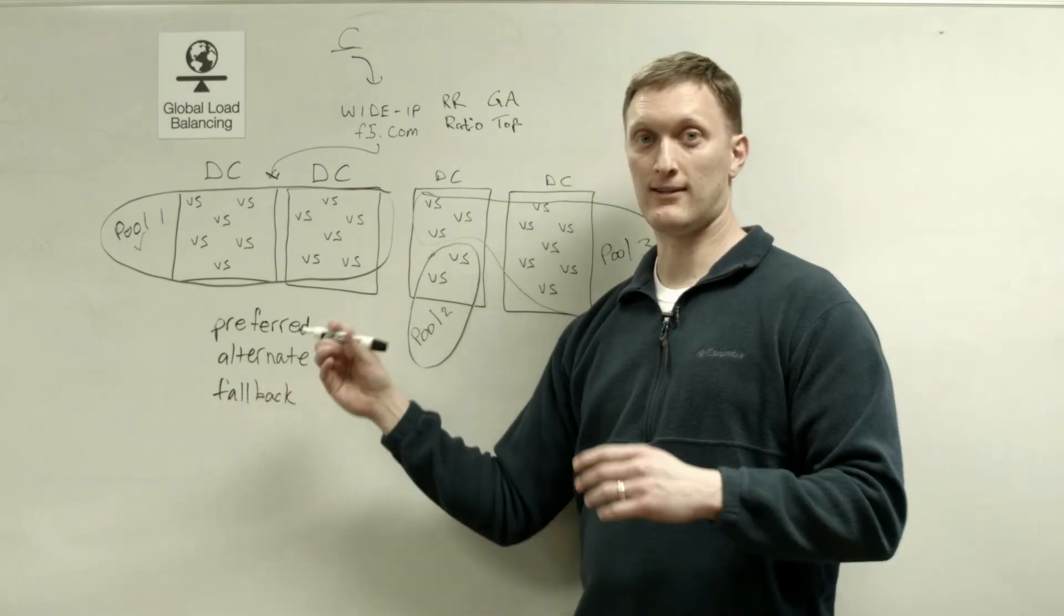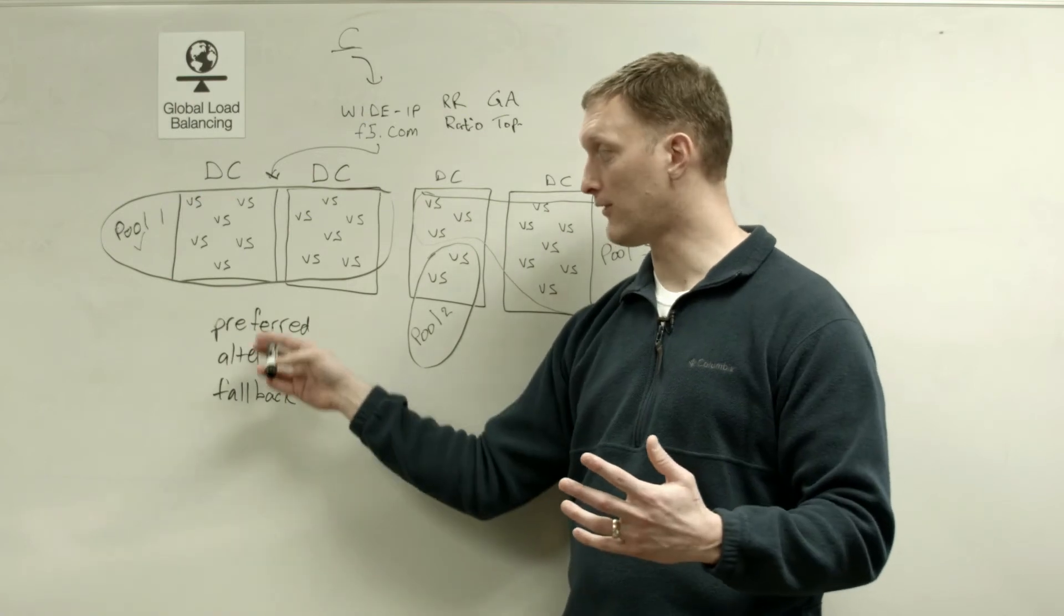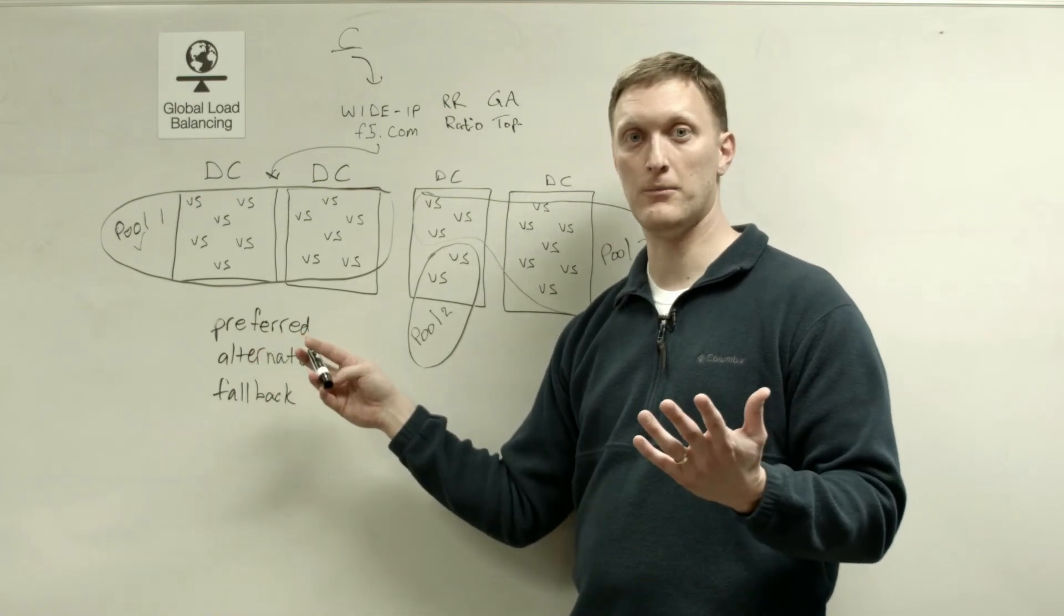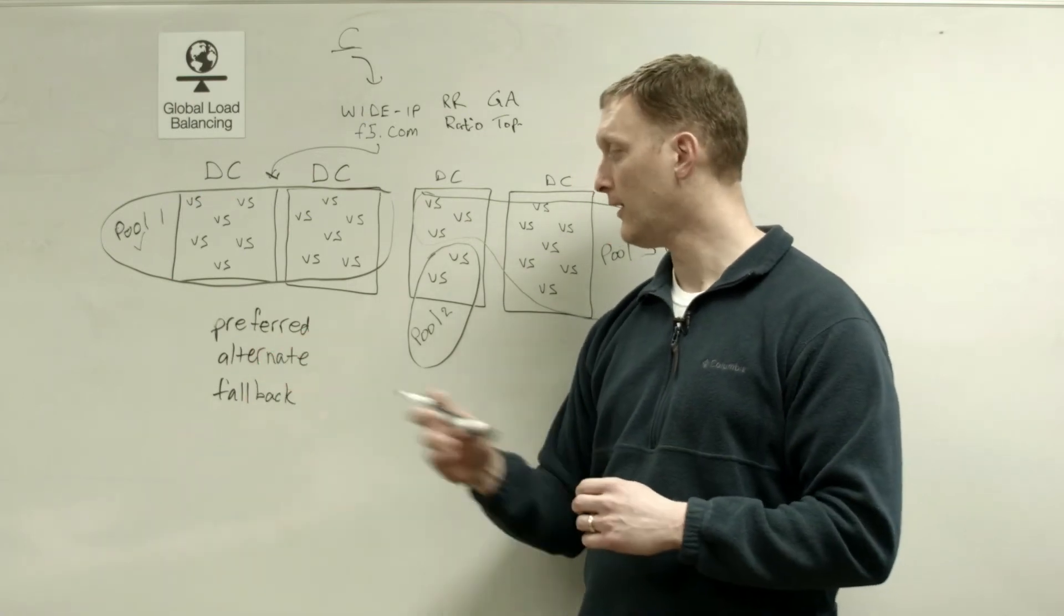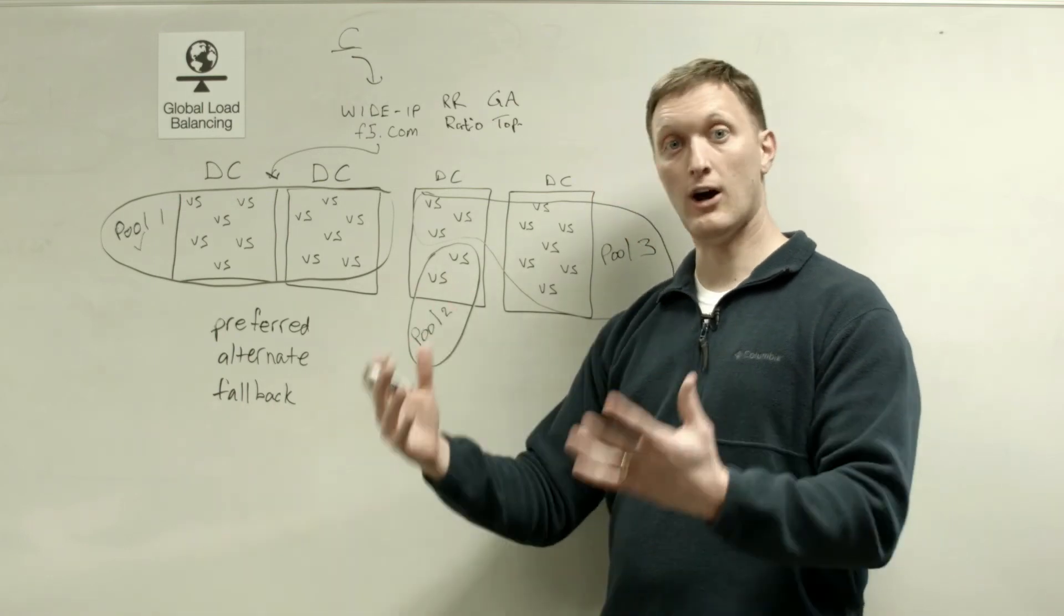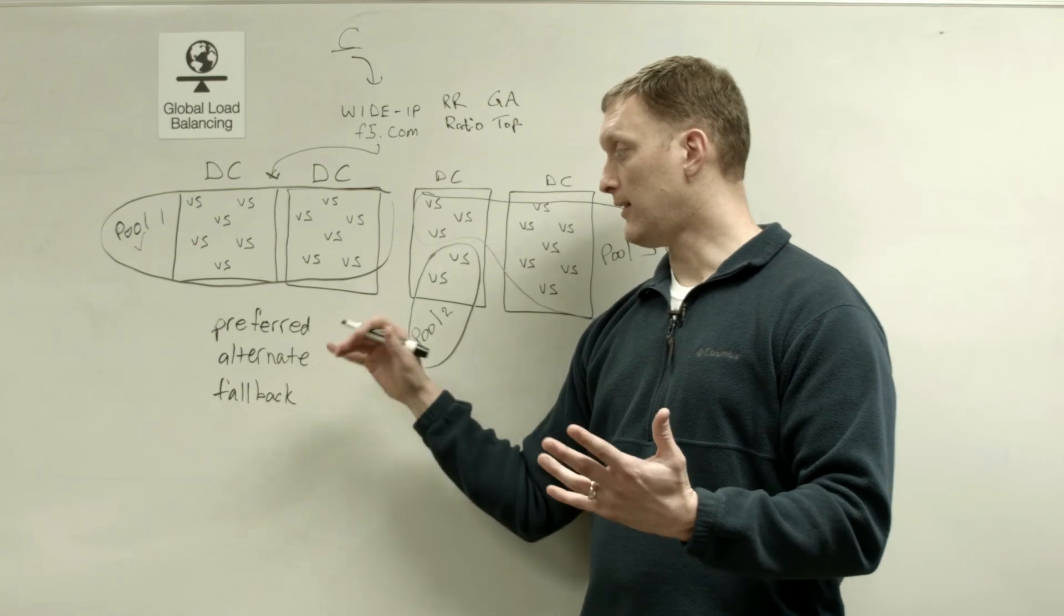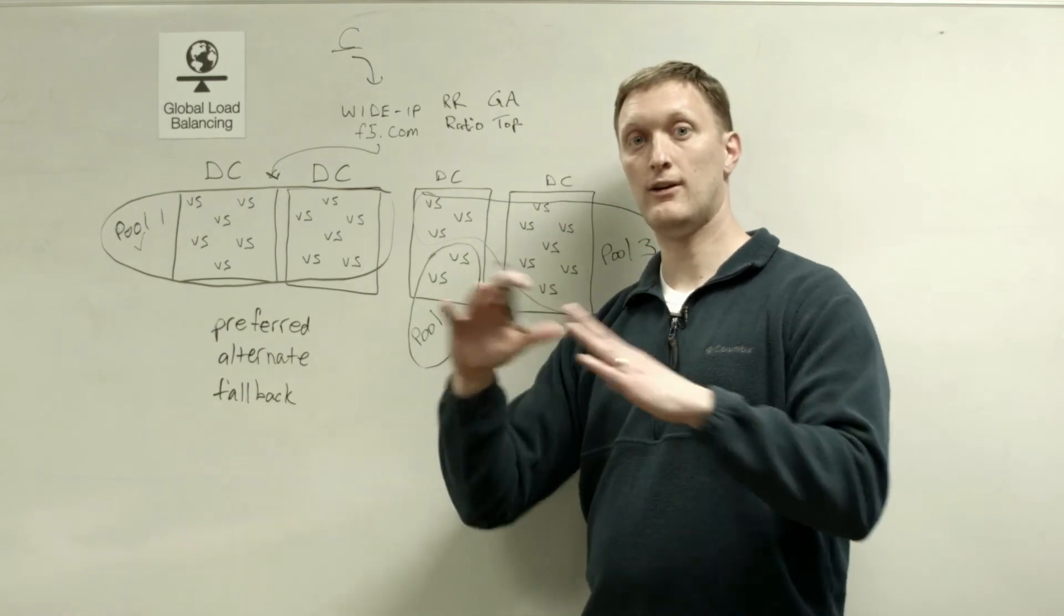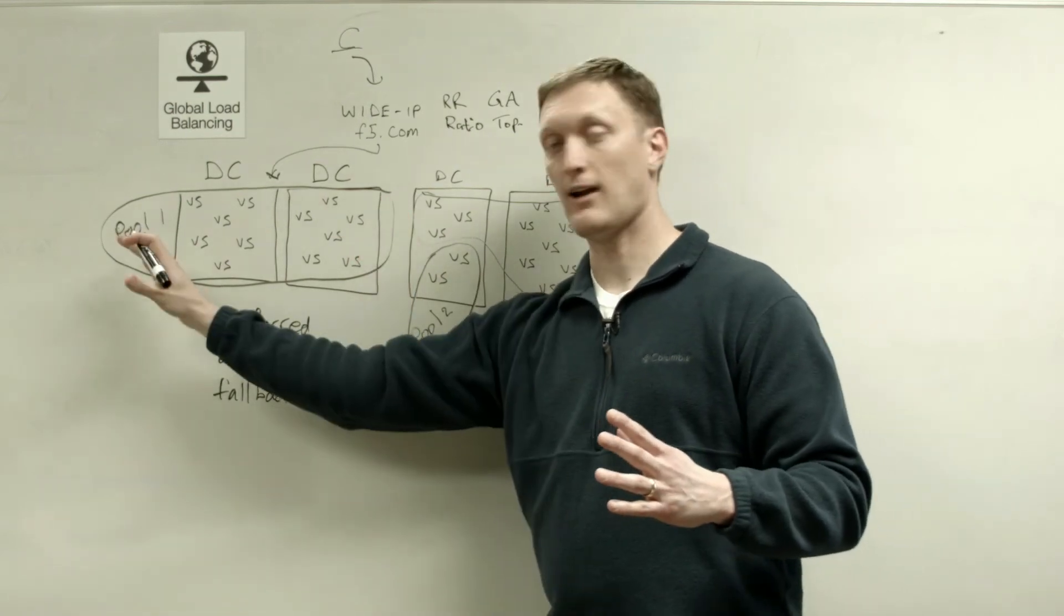And then finally, the fallback is kind of that, hey, both of these are gone, neither one of them worked. And so now we're at the fallback level. The fallback has a couple of different options there. You can say none, which fallback to none basically means, hey, there is nothing available in this entire pool. And so it comes back to the wide IP, and then it's going to load balance to one of the other wide IP pools, and then go select a virtual server from that pool.